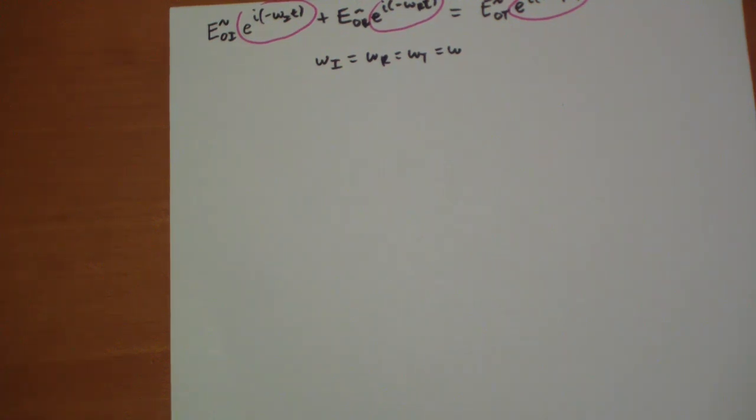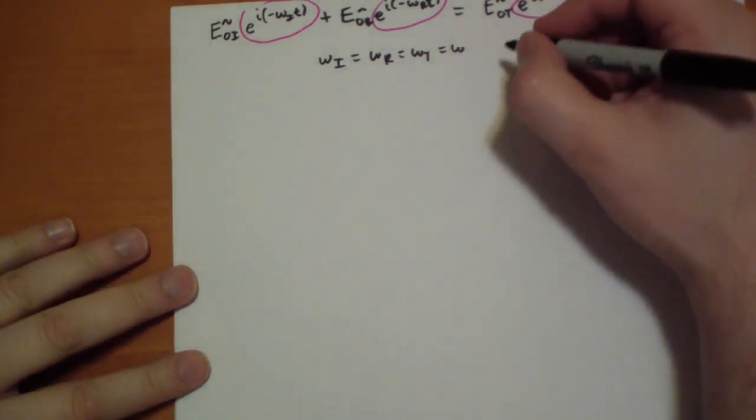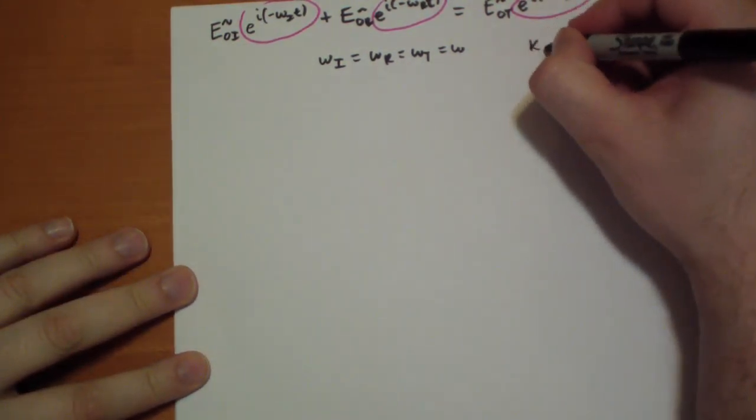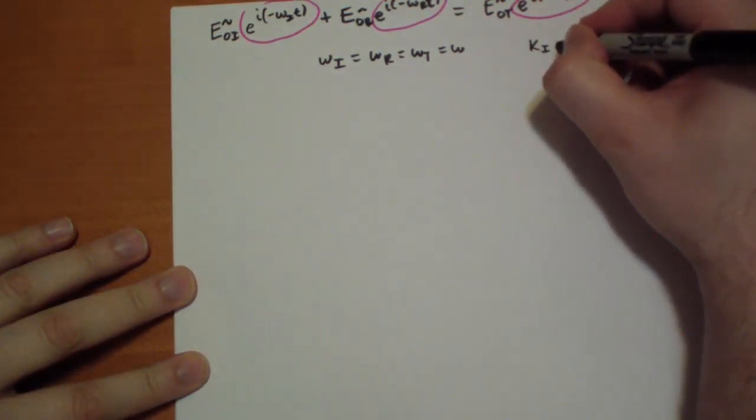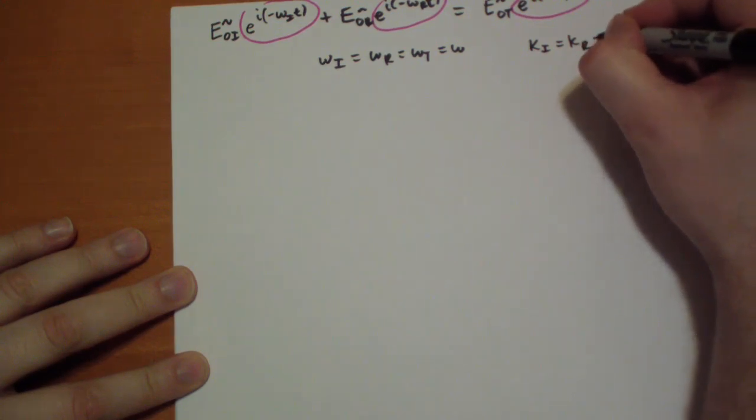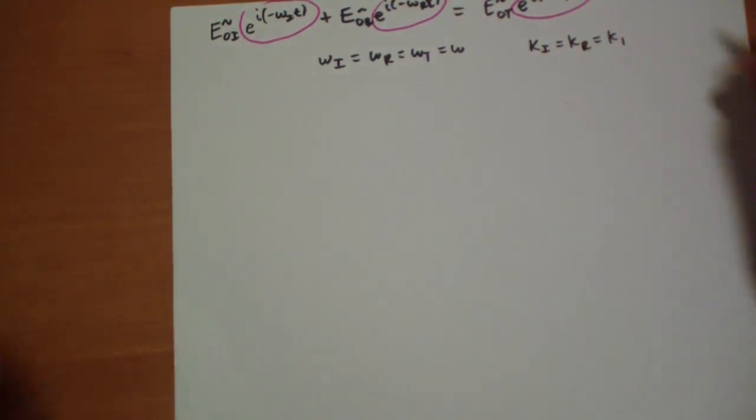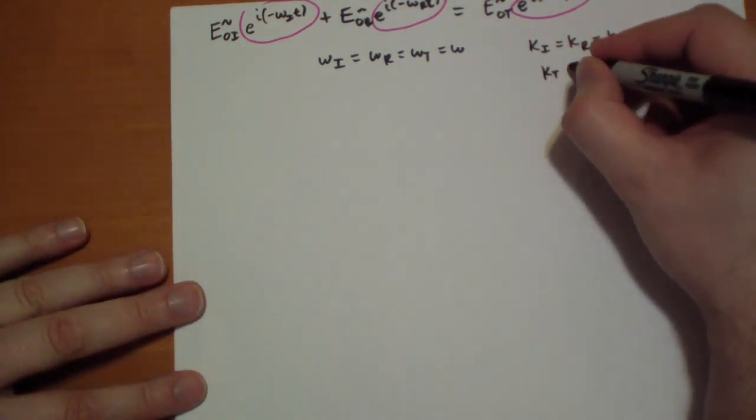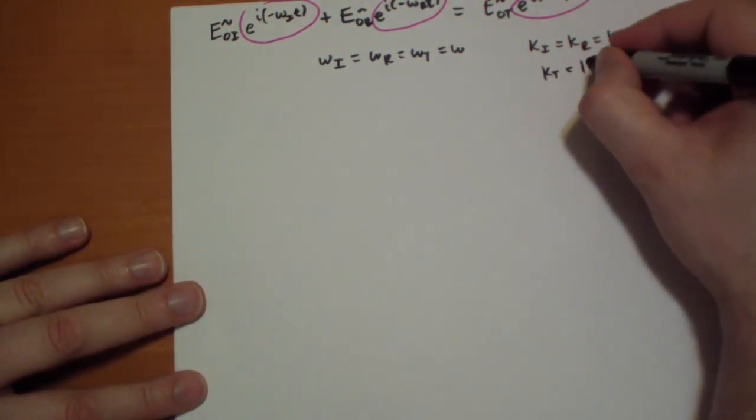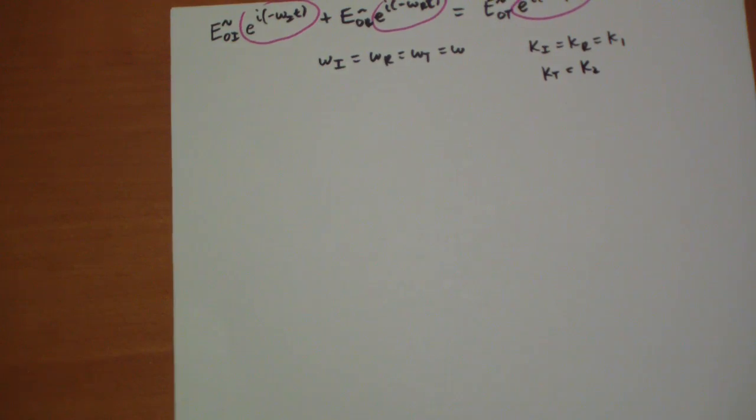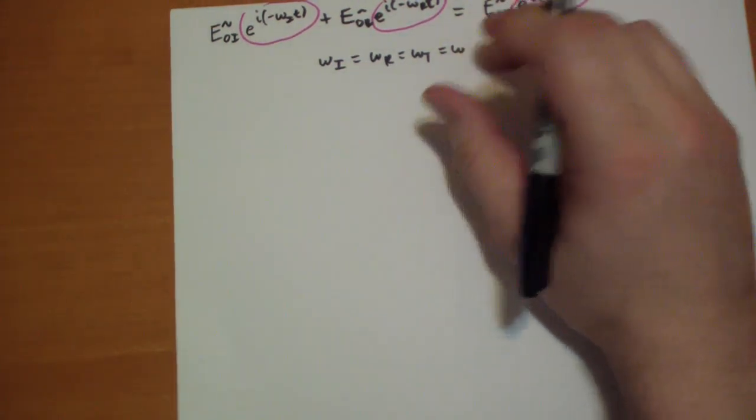And so this is why we know that the omegas have to equal, and we'll just call that omega now. And because of that, remember kappa and omega are related to each other through the medium. So I'm going to say that kappa incident has to equal kappa reflected, and I'm just going to call that kappa 1 because it's the kappa on the left side. And then I'm going to call kappa t, the transmitted kappa, just kappa 2 because it's the kappa on the other side. That's a direct result because the omega is equal for everything.